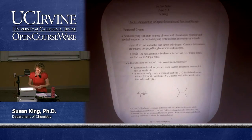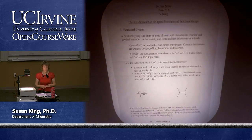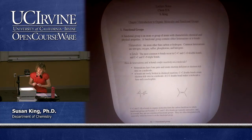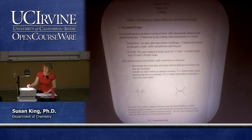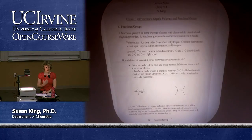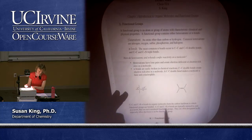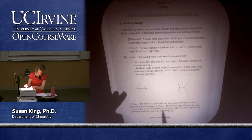The most common pi bonds occur between carbon-carbon (double and triple bonds) and carbon-oxygen, as well as carbon-nitrogen triple bonds. How do heteroatoms and pi bonds confer reactivity? Heteroatoms have lone pairs and create electron-deficient or electron-rich sites on a molecule. For example, oxygen has lone pairs, which make it a base and a nucleophile. Because oxygen is more electronegative than carbon, the C–O bond is polarized, making carbon electron deficient, or electrophilic.